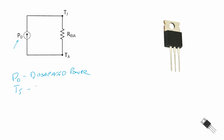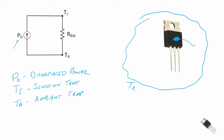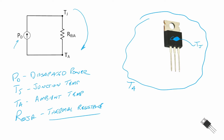We have T sub J, that is called the junction temperature, and the junction temperature is inside the case where the actual device resides. And then we have the ambient temperature, which is the temperature outside. Finally, we have the thermal resistance R theta from the junction to the ambient. The thermal resistance is a measurement of the impedance of the flow of energy from within the device — we have energy in the device that we are dissipating out to the ambient.